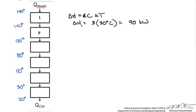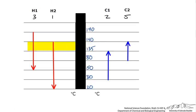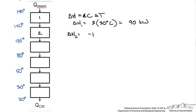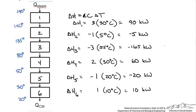For the second interval, three streams are involved. We add up the heat capacities of the hot streams — giving 4 — and subtract the heat capacities of the cold streams, so 4 minus 5 gives negative 1. Multiplied by the 5-degree interval, this gives negative 5 kW. Completing this for the remaining temperature intervals gives us all the interval enthalpies. The next step is to calculate the residual enthalpy as a cumulative sum: starting at 90 kW, adding negative 5 drops us to 85, and so forth.